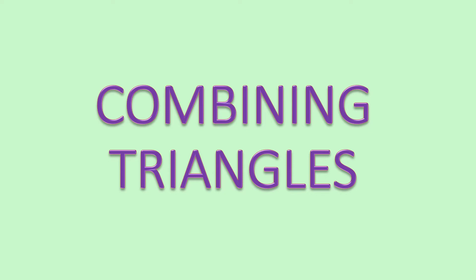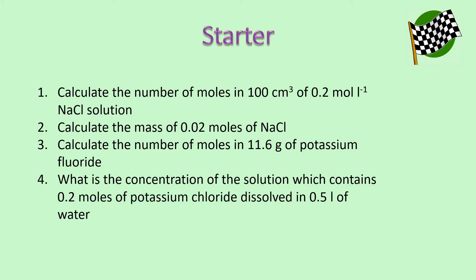Hello everyone, welcome to our final lesson in the formula and calculations topic, which is combining triangles. Beginning with our starter questions, these cover both the triangles we've covered so far: our N equals M over GFM triangle and our N equals CV triangle. You need to make sure you're definitely happy with all of this content before going on with today's lesson, so if you're unsure at all, have a look back over your notes or the previous lessons which are on Microsoft Teams and Files.